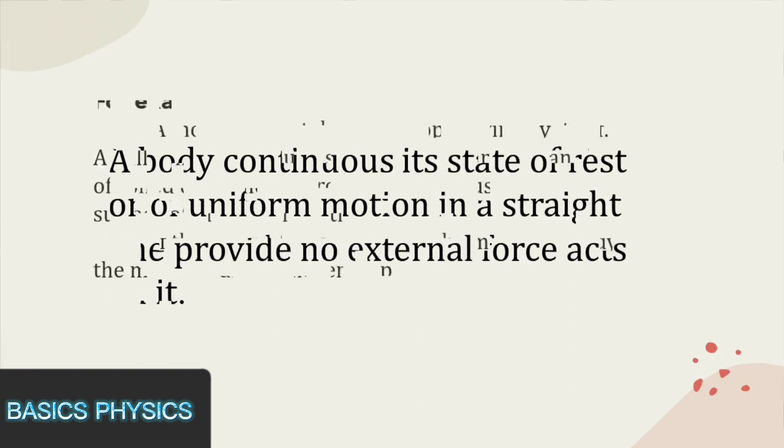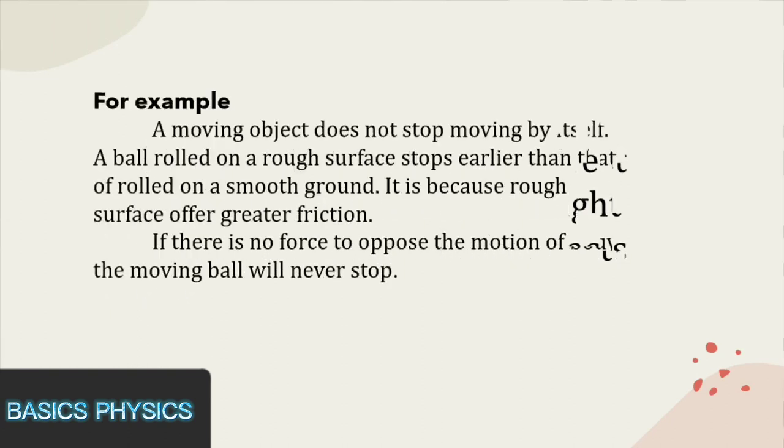For example, a moving object does not stop moving by itself. A ball rolled on a rough surface stops earlier than that rolled on a smooth ground. It is because rough surface offers greater friction. If there is no force to oppose the motion of body, the moving ball will never stop.